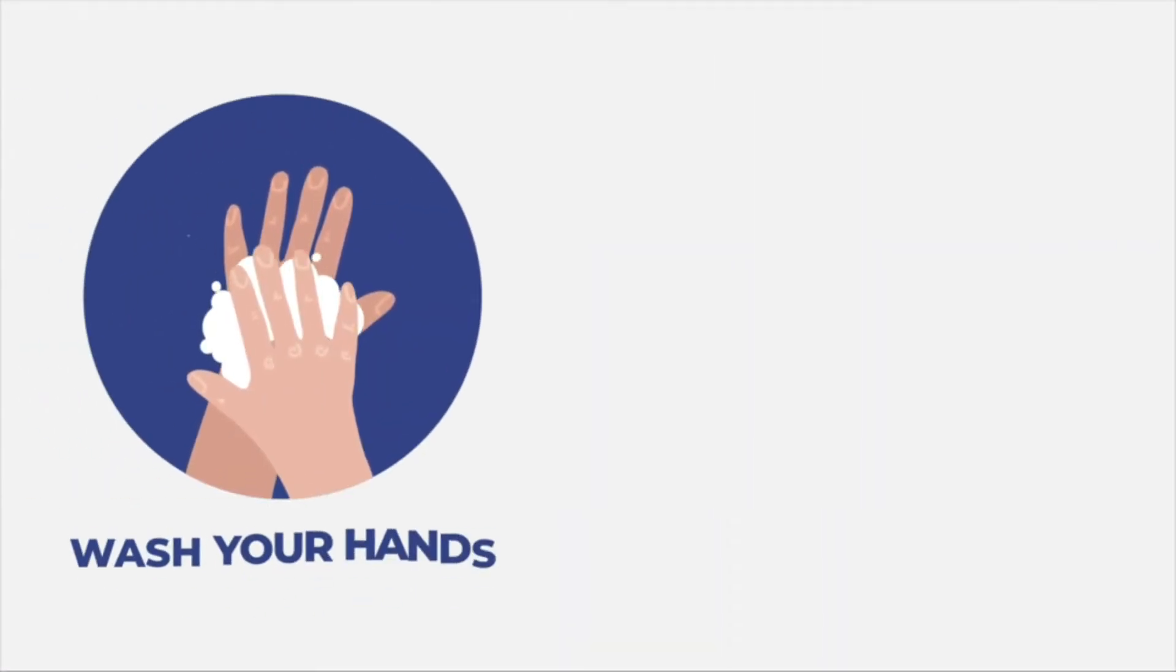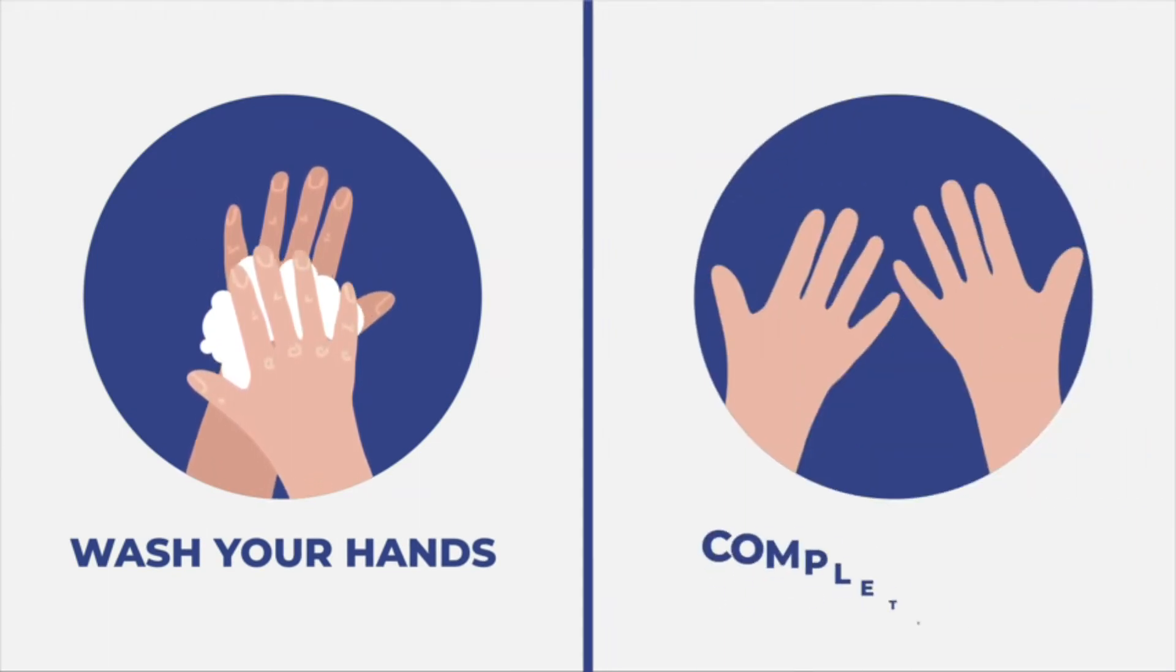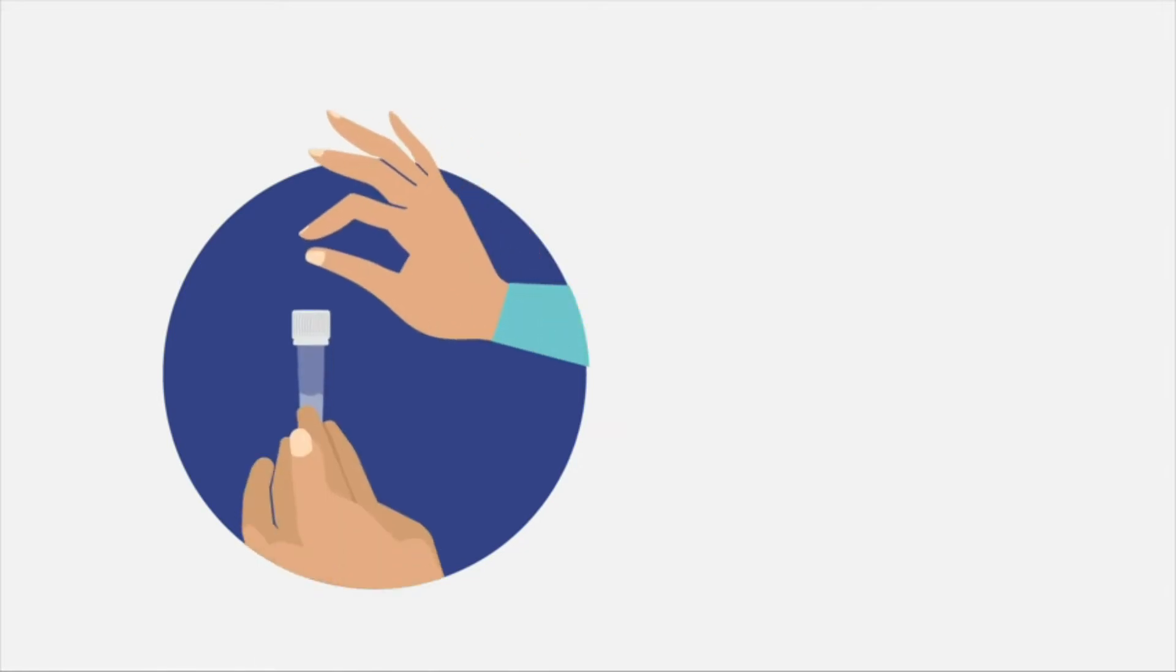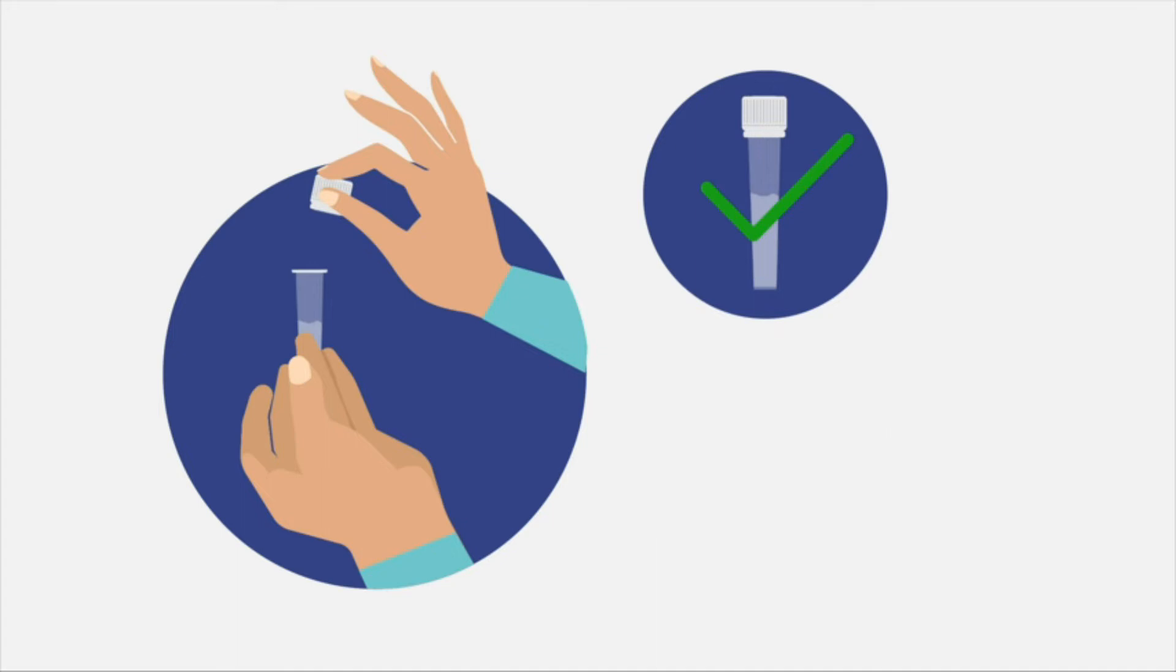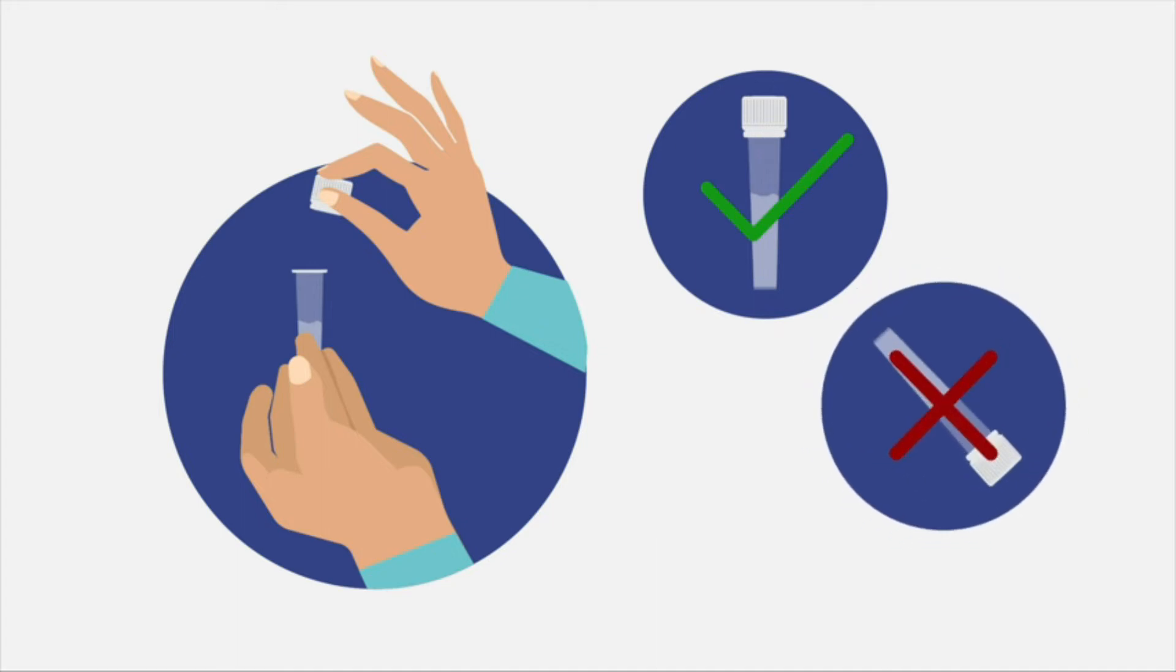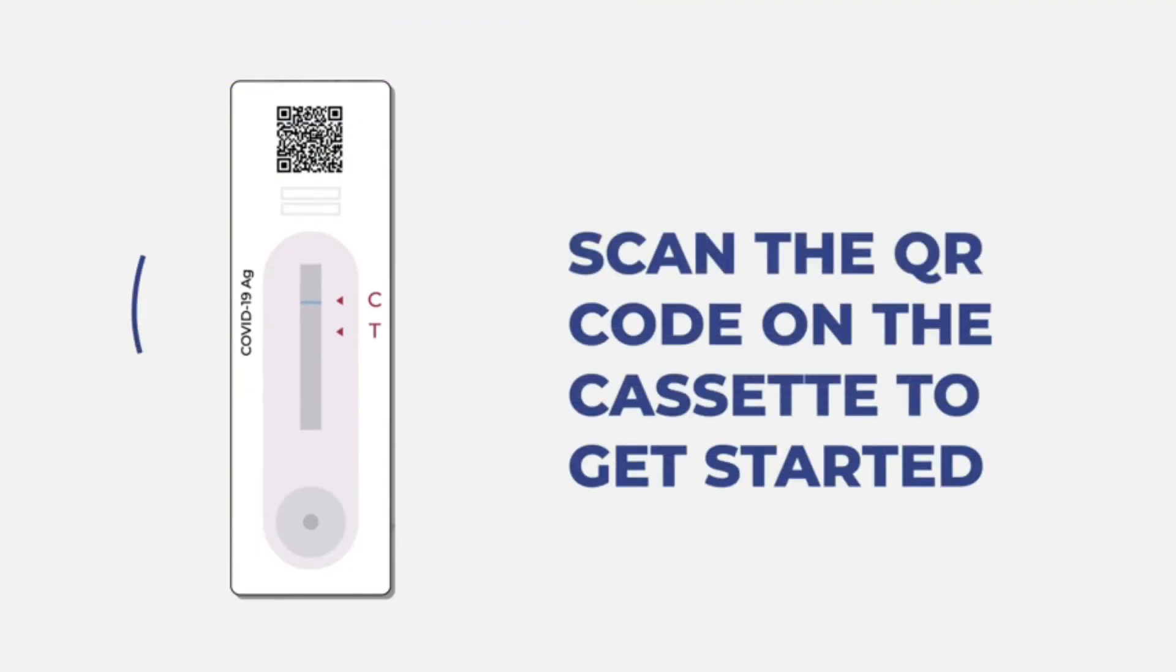Before you start, wash your hands and make sure they are completely dry. Take out the pre-filled extraction buffer tube and unscrew the cap. Hold it straight so that the content at the bottom of the tube doesn't spill out. Scan the QR code on the cassette to get started.